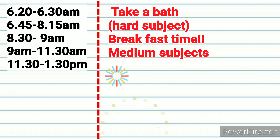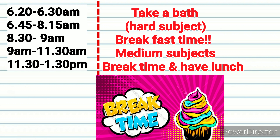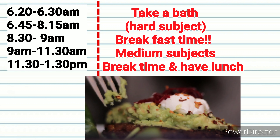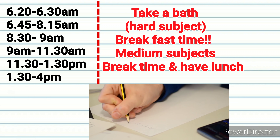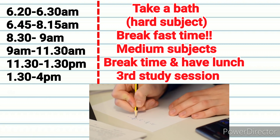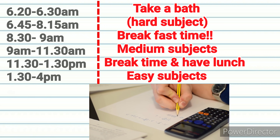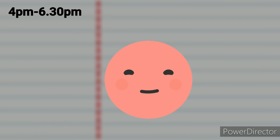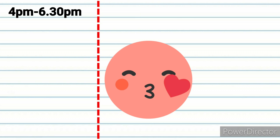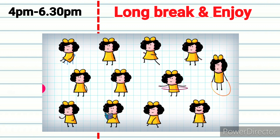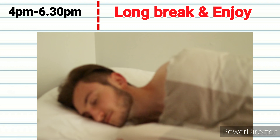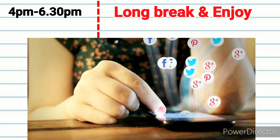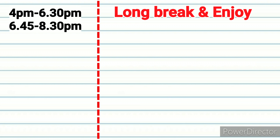11:30 AM to 1:30 PM: take a long break, have a light lunch, and get relaxed. 1:30 PM to 4:00 PM is your third study session: study or learn your easiest subjects. 4:00 PM to 6:30 PM: enjoy, do whatever you want — relax, take a power nap, check out your social media, or anything you want.